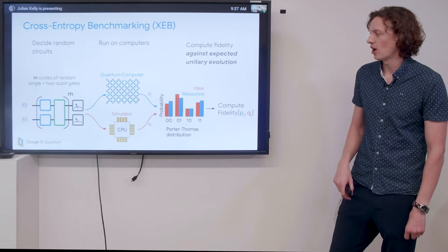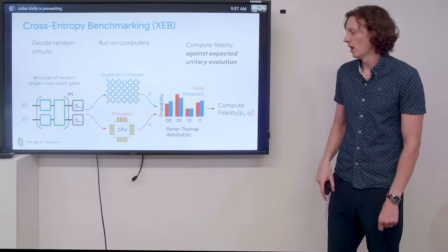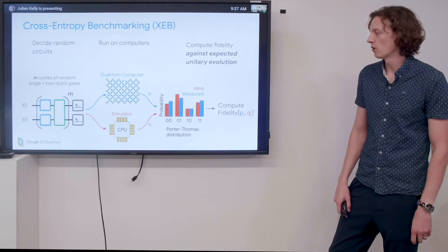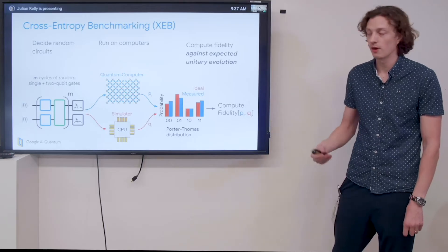We take this circuit and send a copy to the quantum computer and a copy to a simulator. We take the simulator as the ideal distribution of what the quantum evolution should have done, and we compare the probabilities to what the quantum computer did, the measured probabilities.